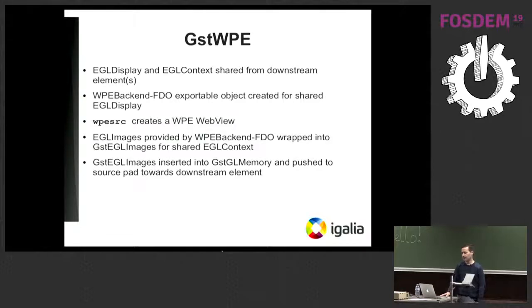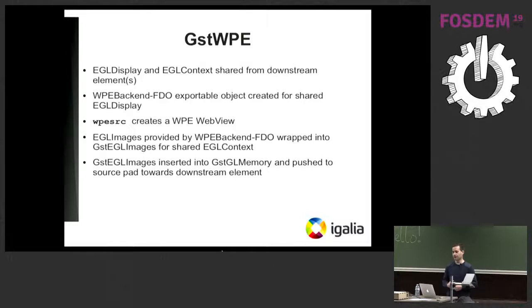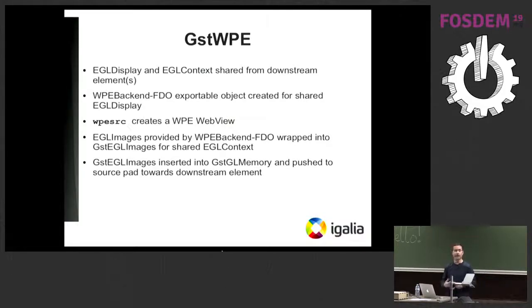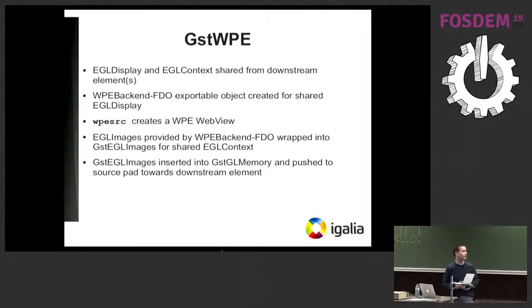The project I developed is basically a WPE sub-plugin providing a source element. The dependency is that you need to have GL support in a pipeline. The FDO backend is used internally by the source element, and a web view is created by the source element. It will load the page configured as the location property of the source element. Internally you get EGL images from the view backend, and those EGL images are wrapped in GST EGL images — so there's no copy, everything happens in the GPU, which performs quite well.